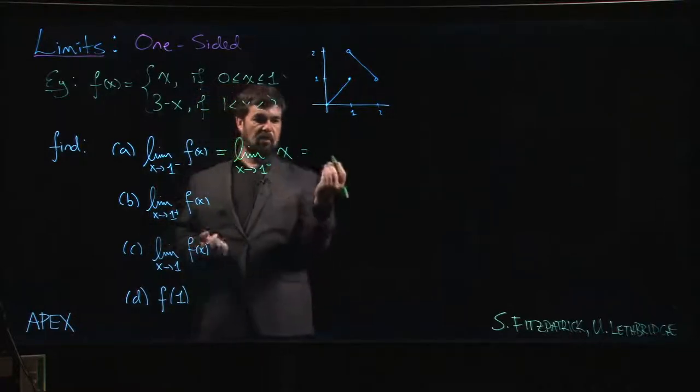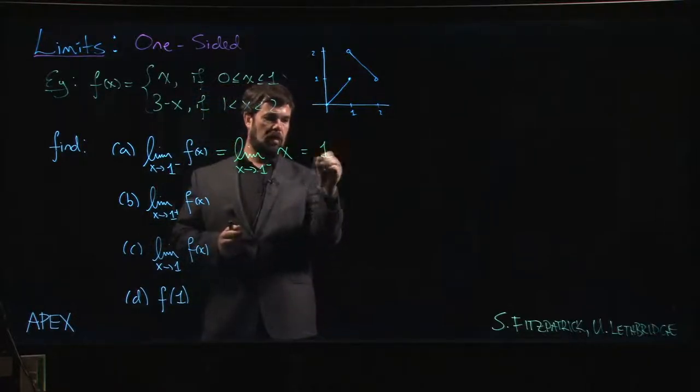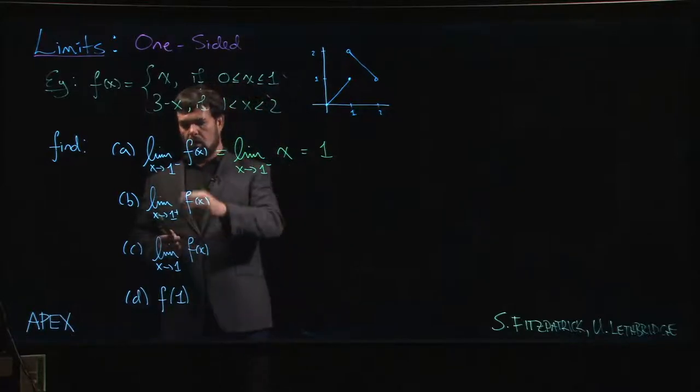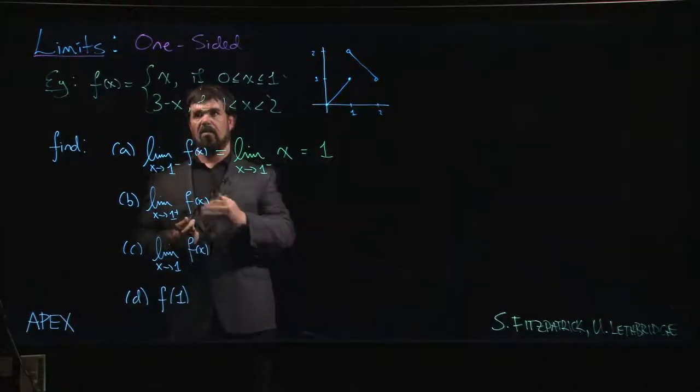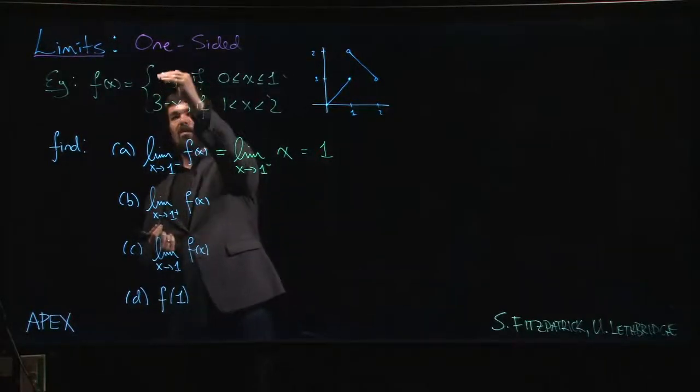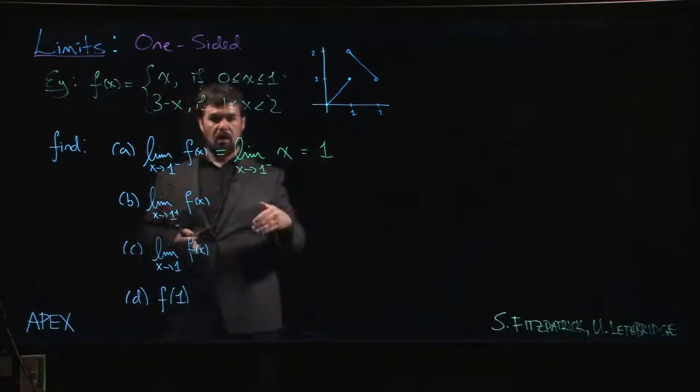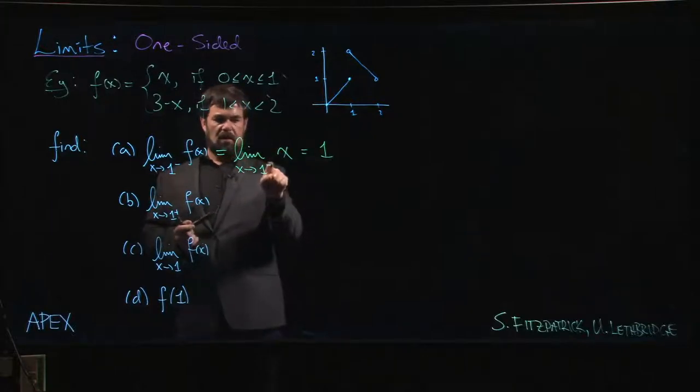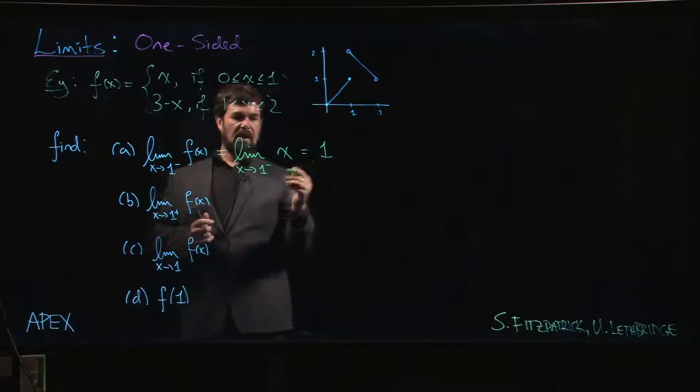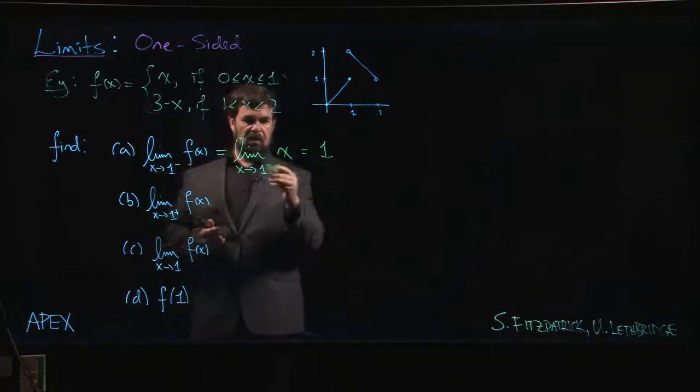And once you've substituted in some expression like this, you evaluate the limit as usual. We know how to evaluate the limit of x with direct substitution, we get one. So the role of the minus or the plus, the left-hand limit or the right-hand limit, the role that's played here is in telling us which piece of this piecewise function to choose. Once we've chosen it, this no longer really is relevant.